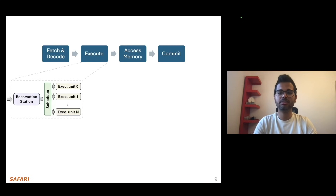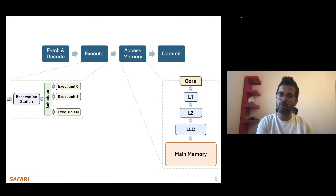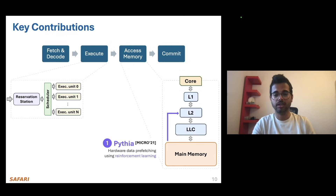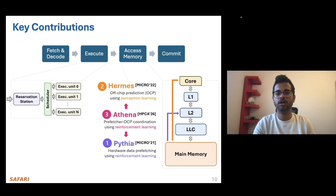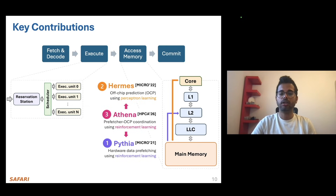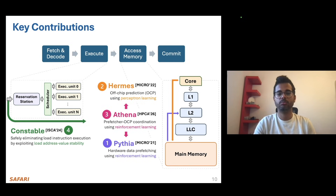To this end, this thesis proposes four key mechanisms throughout the entire execution pipeline of a processor. First, we propose Pythia, which is a reinforcement learning based hardware data prefetching mechanism. Second, we propose Hermes, which is a perceptron learning based off-chip load prediction mechanism. Third, we propose Athena, which exploits reinforcement learning to coordinate prefetching and off-chip prediction mechanisms. And fourth, we propose Constable, which is a safe load instruction elimination technique by exploiting load data characteristics.